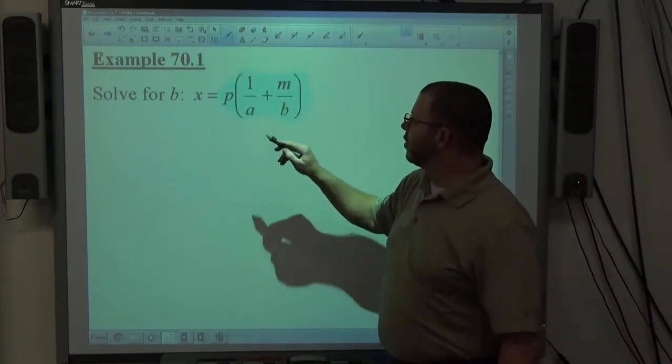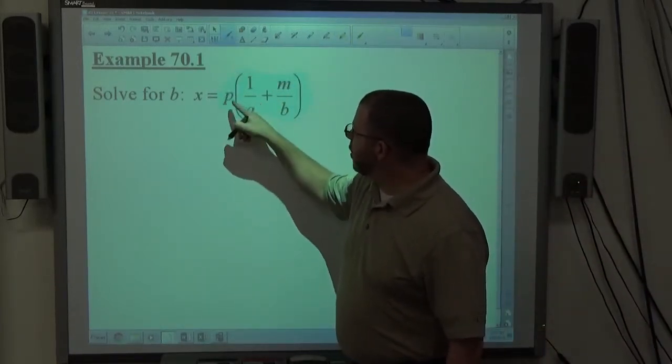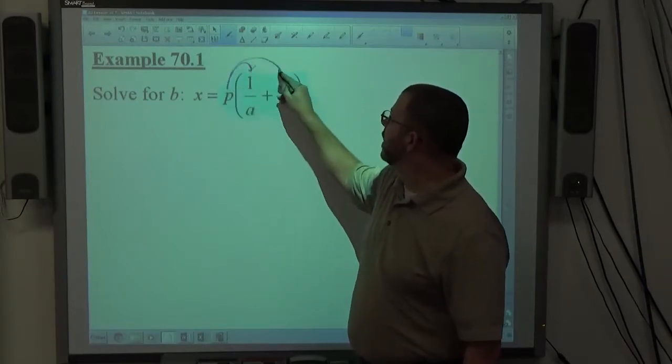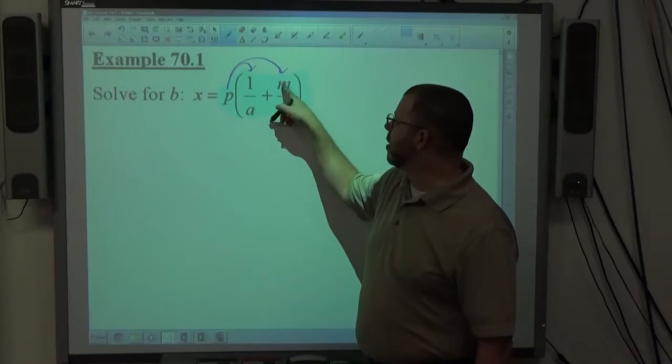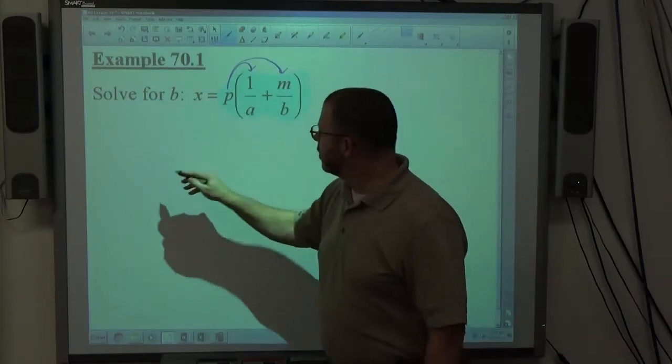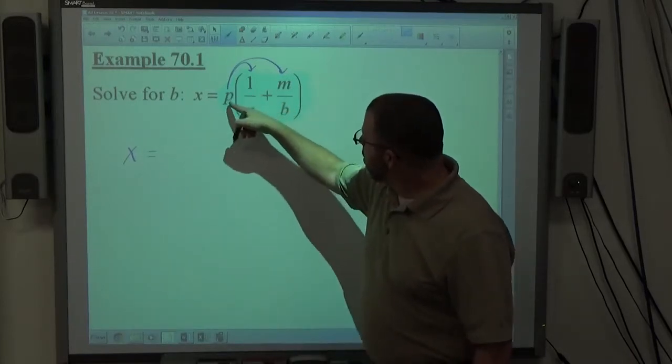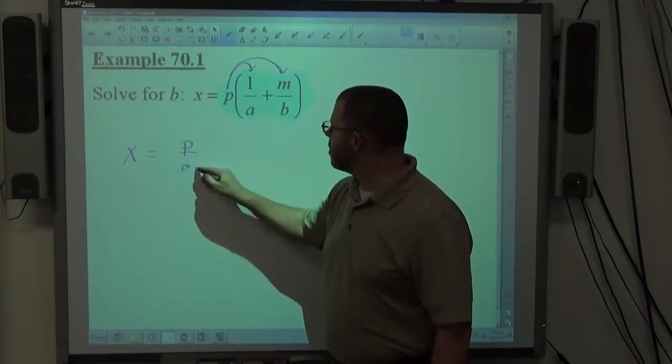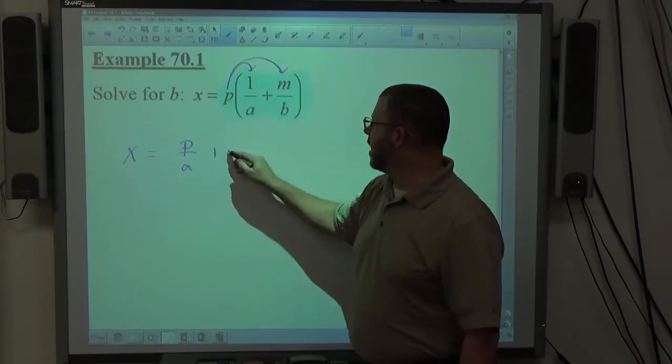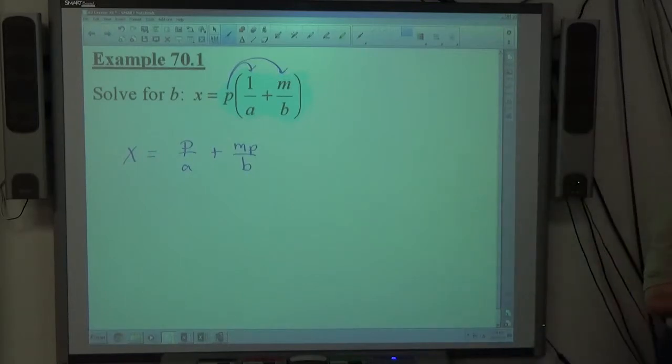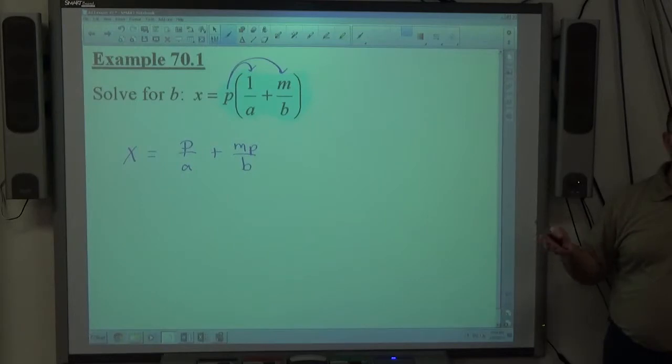All we've got to do to get rid of parentheses is distributive property. P, which is a numerator object, no fraction, right? So P times this and P times this is simply going to multiply the numerators by P. The denominators aren't going to be affected by the distribution. So X is going to stay X, equals P times 1 over A makes P over A, P times M over B makes MP over B. Alphabetical order is not required, but if you have some sort of organization in your work, it tends to make math easier. So I recommend coming up with something that works for you every time and stick with that plan.